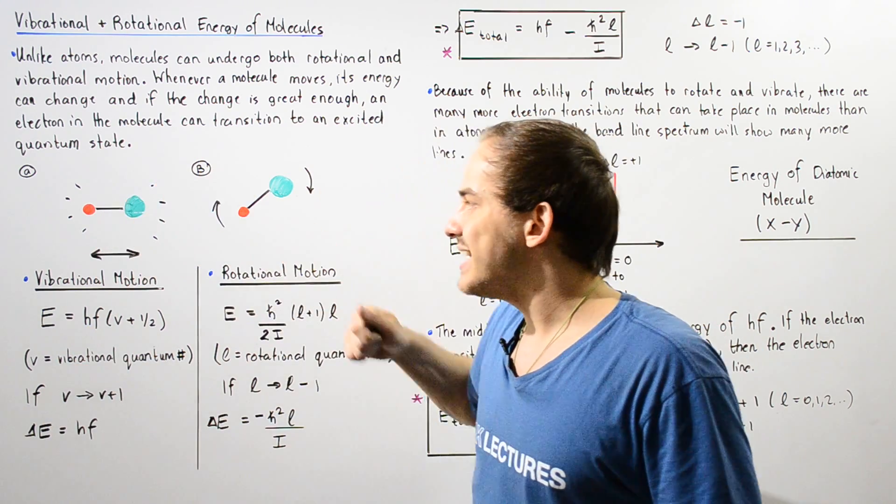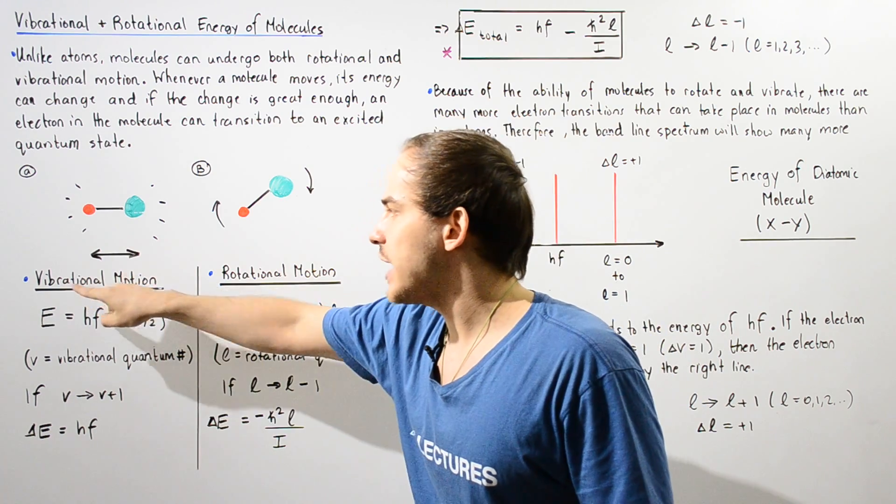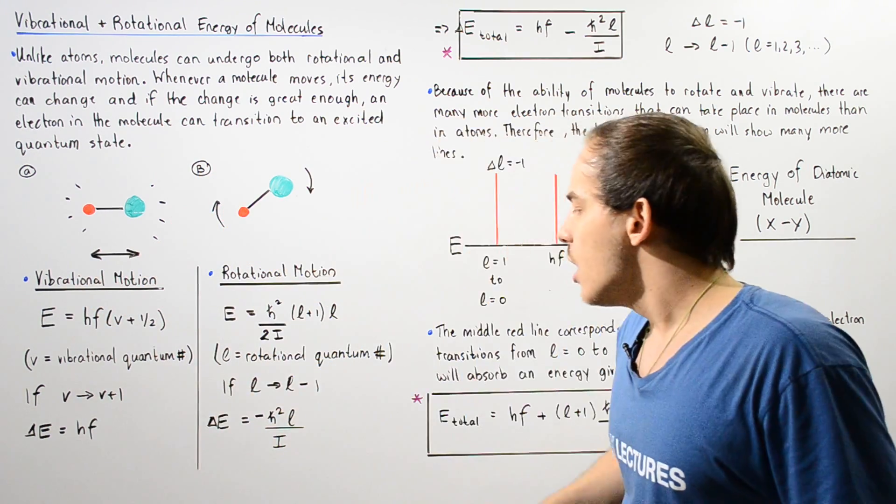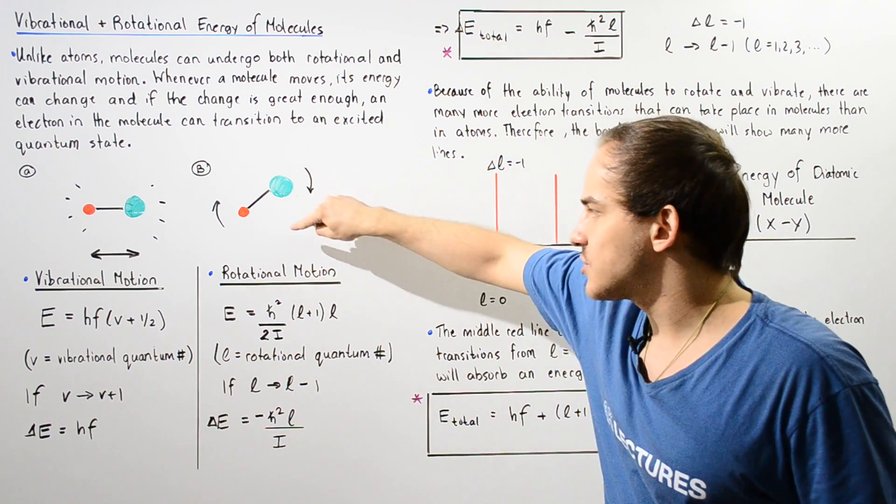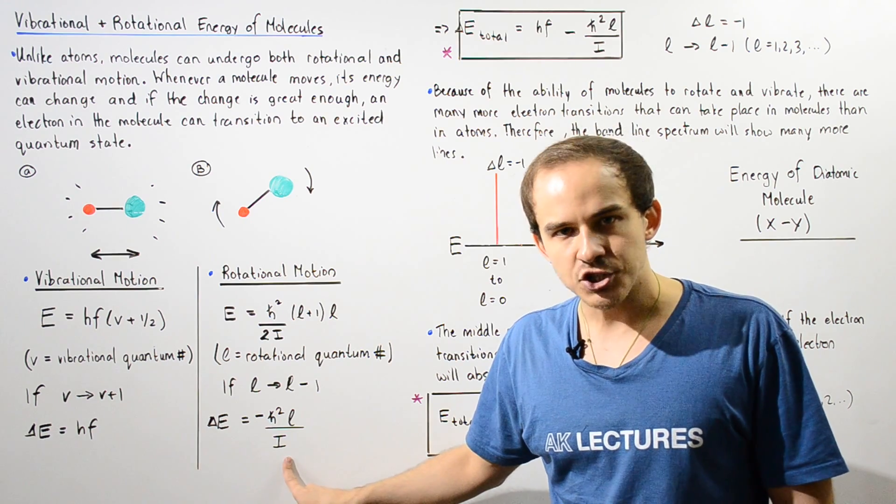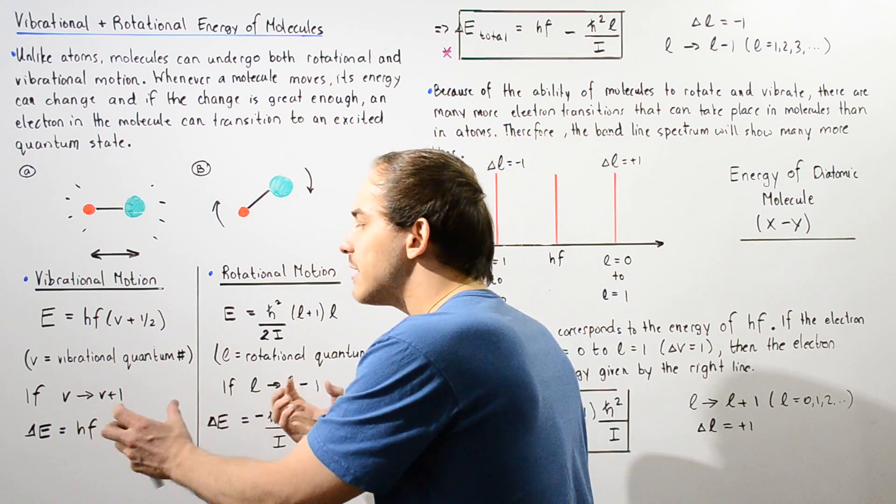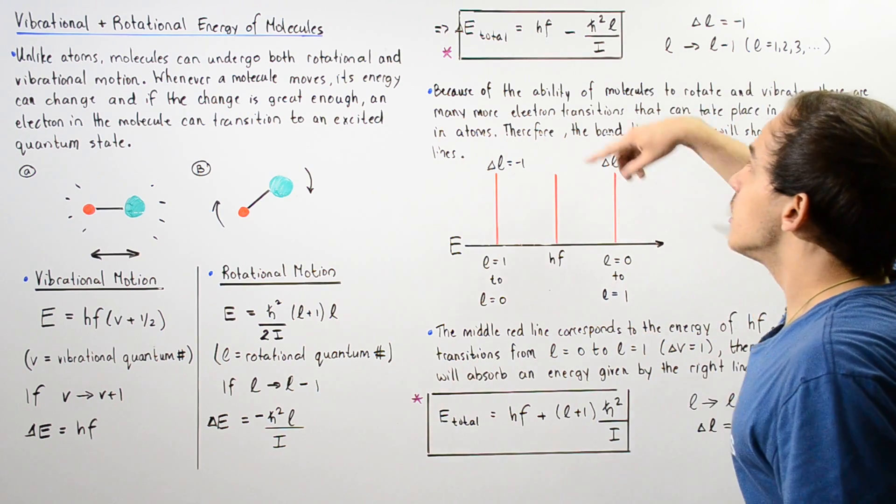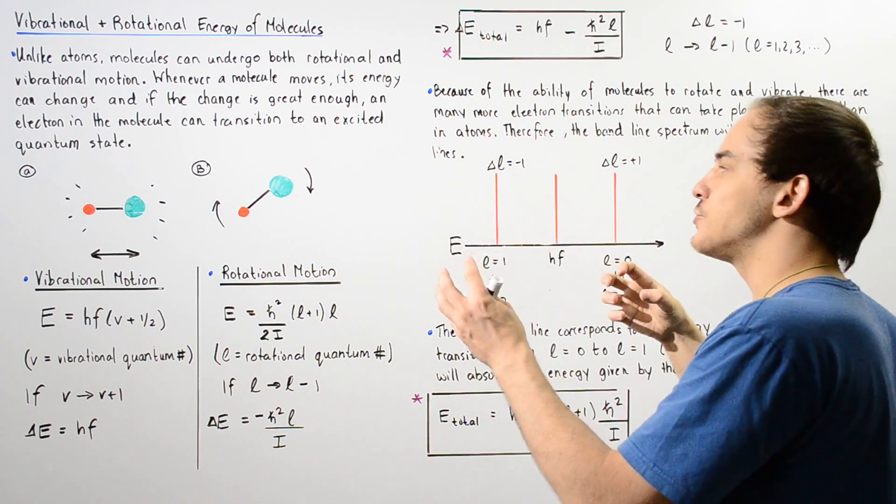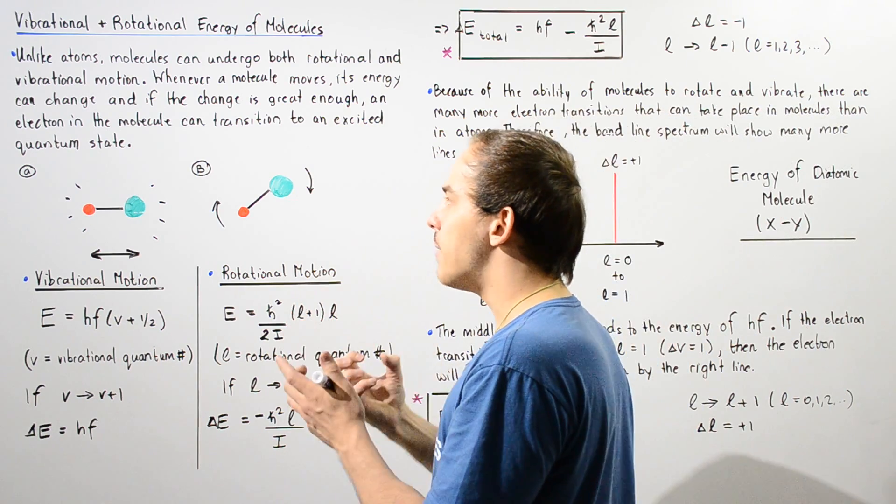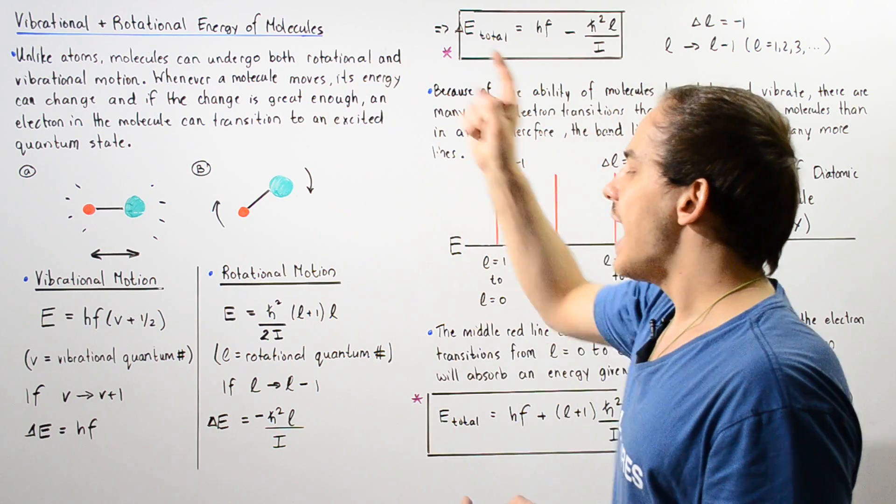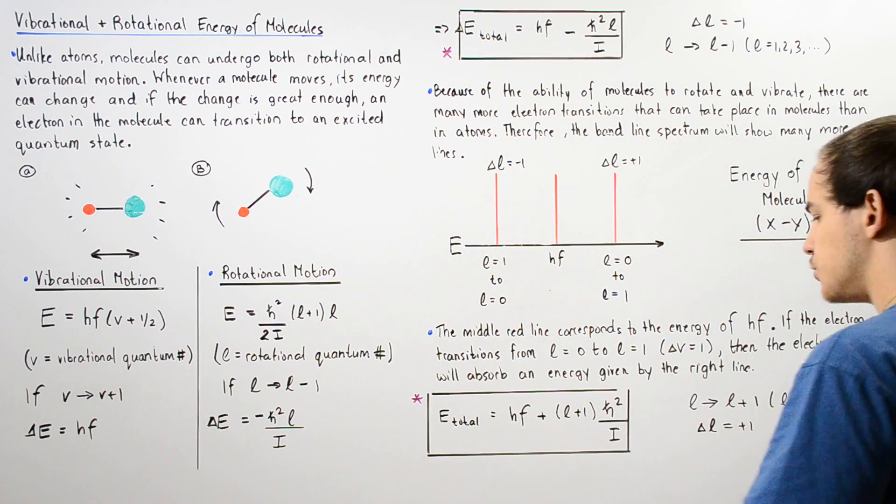our change in energy as a result of the change in vibrational motion is given by this equation, while our change in energy as a result of the rotational motion is given by this equation. Now if we combine these energies, that will give us the change in energy total, so the total change in energy of our diatomic molecule as a result of the change in vibrational and change in rotational motion.